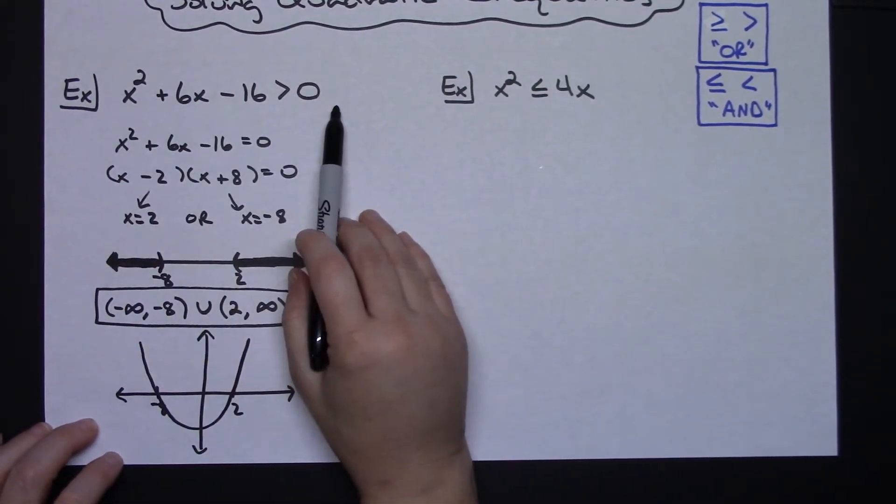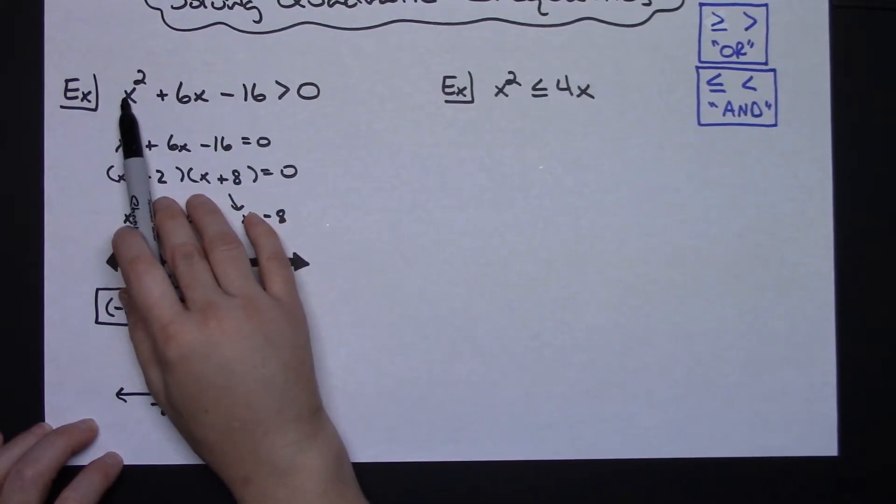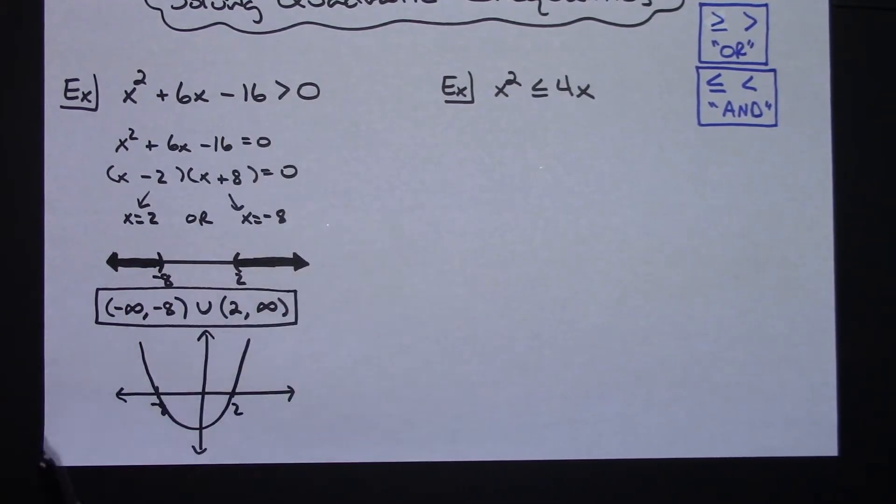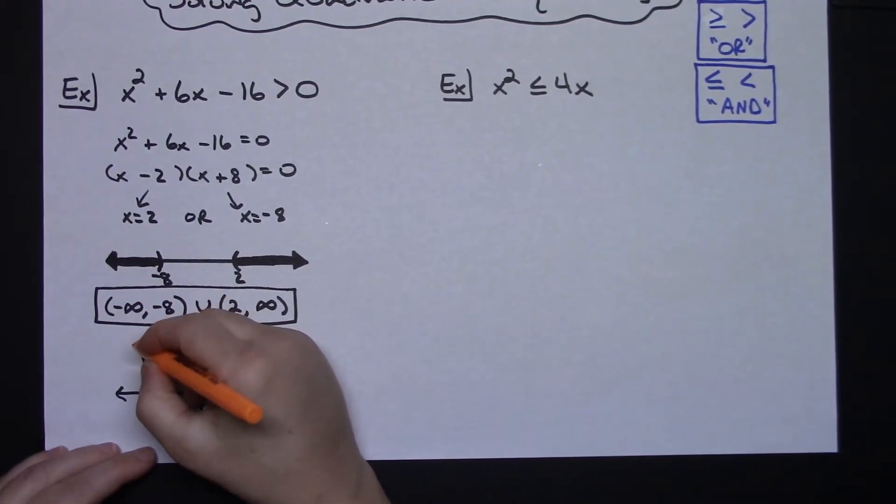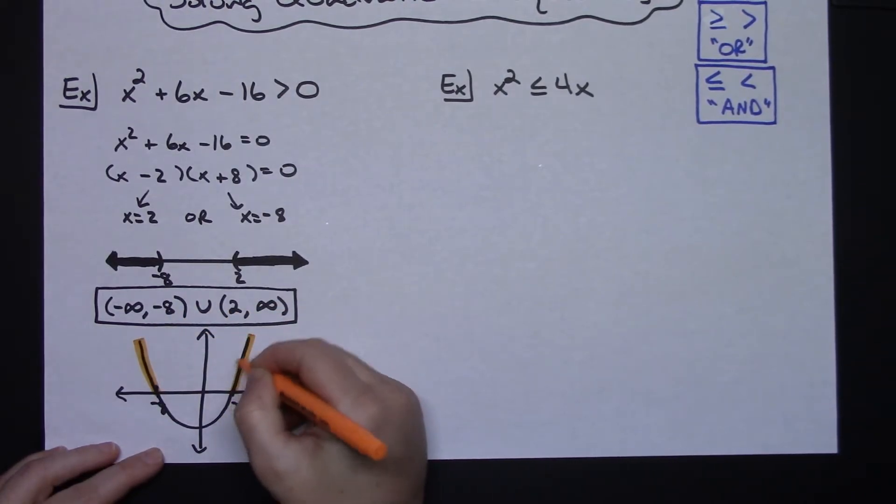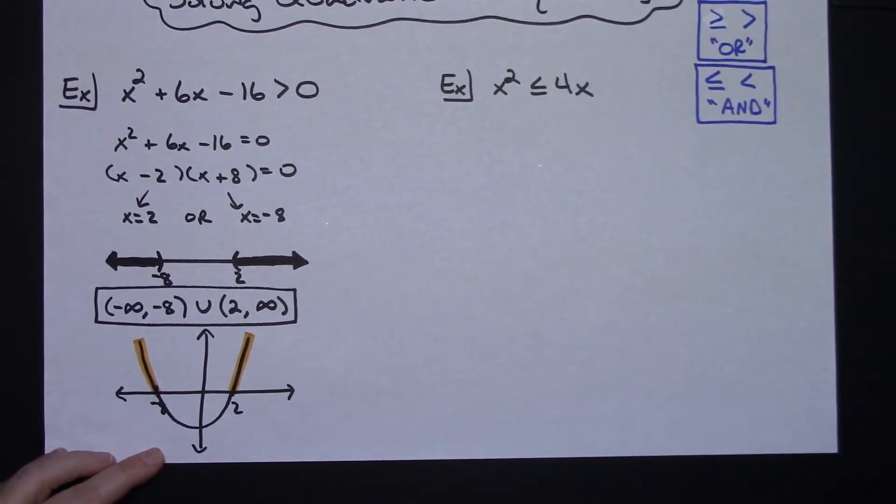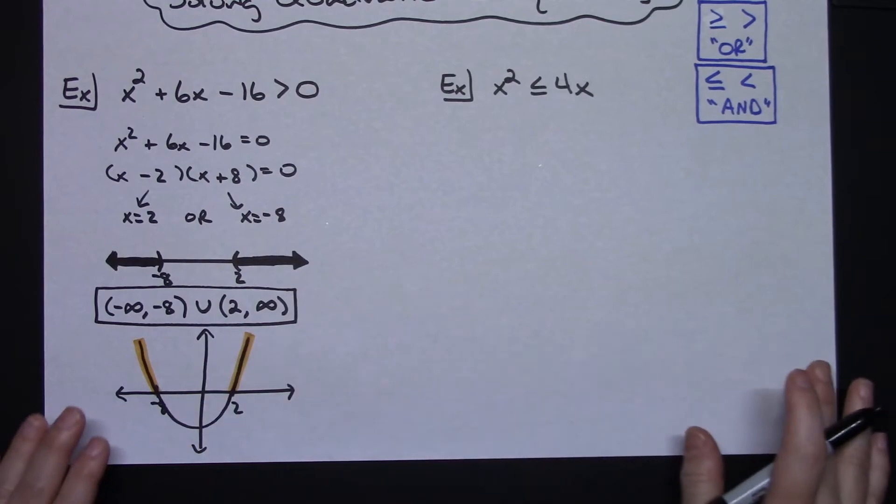So the overall original inequality said, where is this quadratic greater than 0? Where is it above 0? Well, it's above 0 over here and it's above 0 right here. But it's not above 0 specifically at 2 because at 2 it's 0 and at negative 8 it is 0. So then this on our graph, verifying it graphically, corresponds to these two sections that we have just solved algebraically. So a couple different ways to look at it so that you can understand conceptually what's going on.